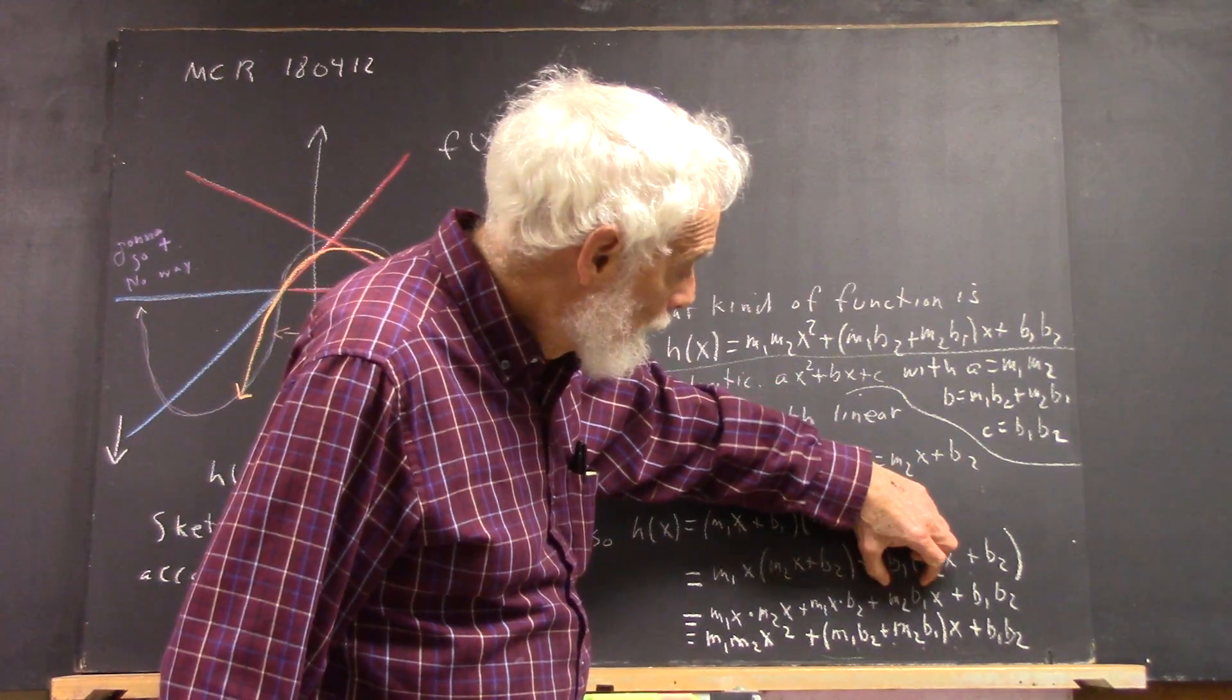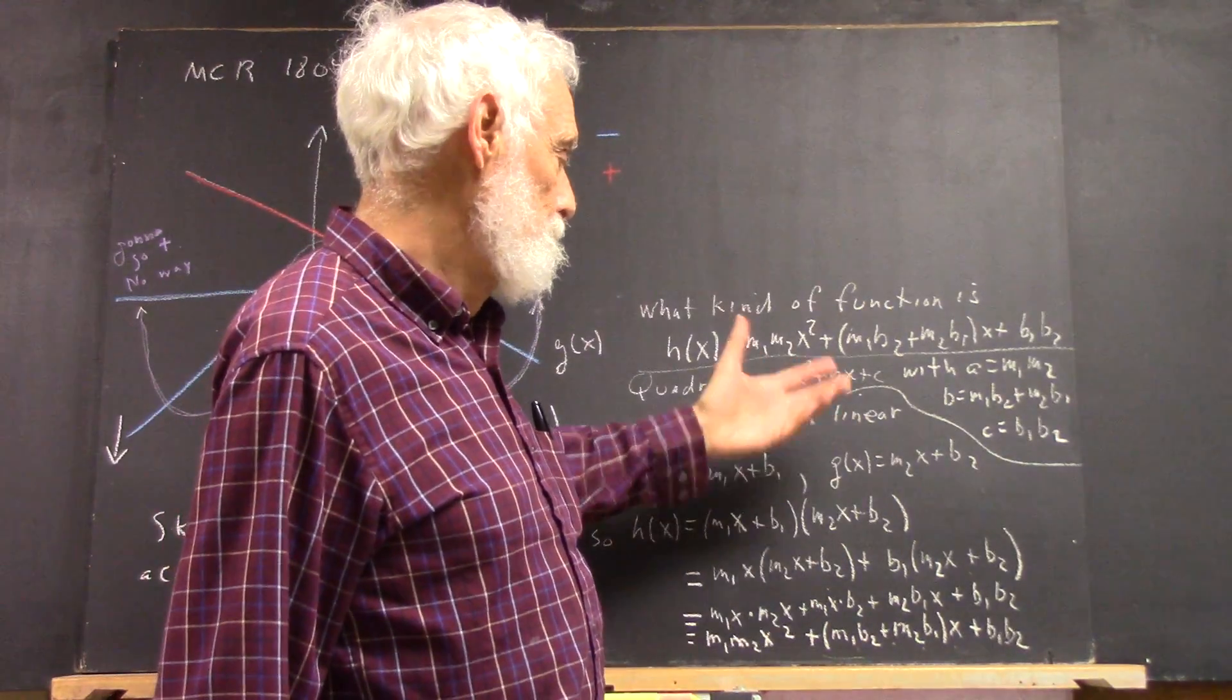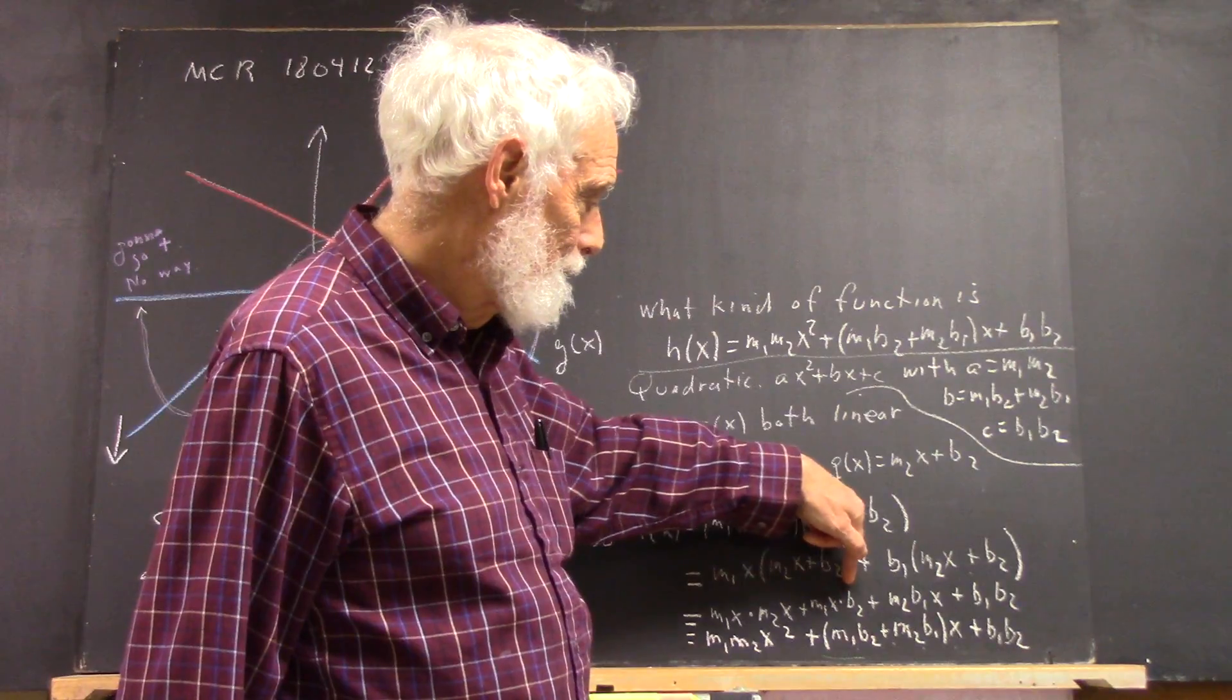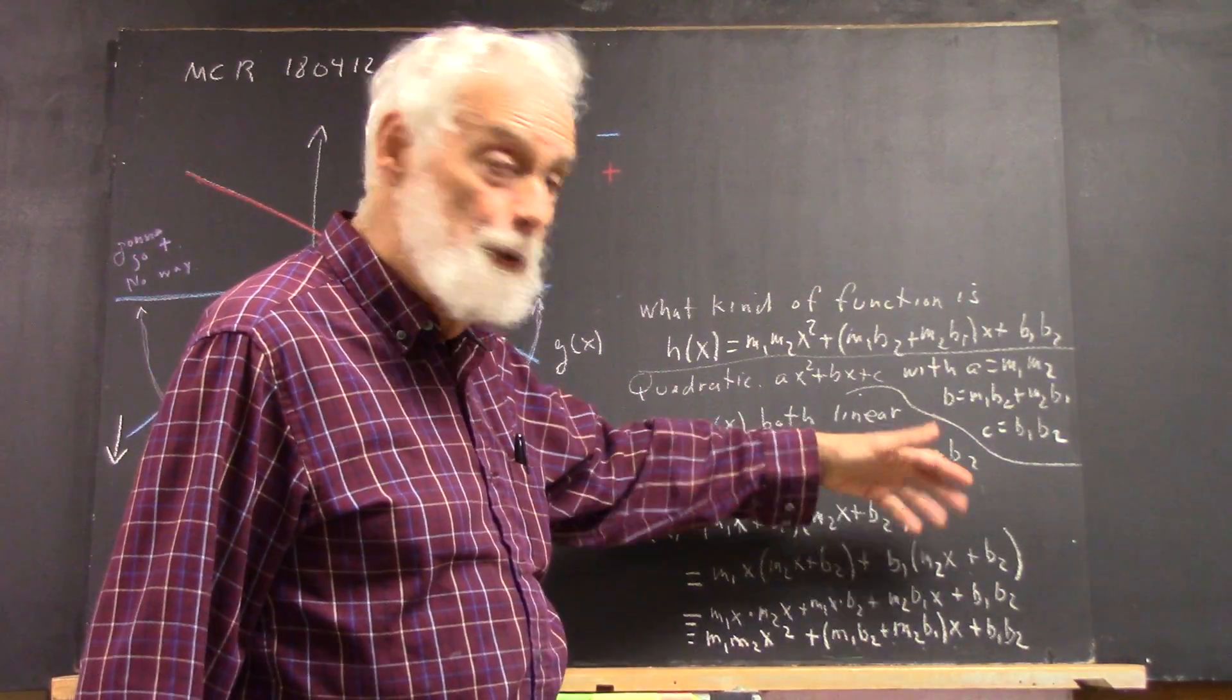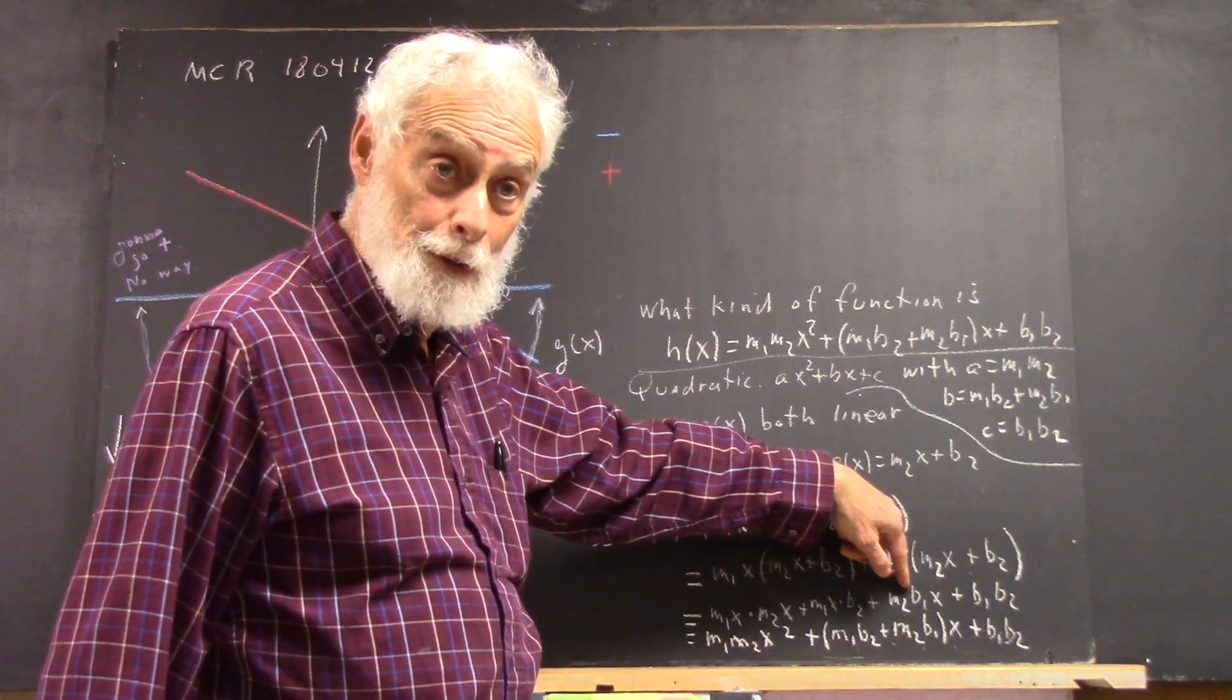And I wanted to write it kind of in the same order I did here, although really I didn't, with the m, the b, and the x here, but an m, an x, and a b here. But I was trying to keep the order of the m1s and b1s, the ms and the bs, the same for both of these. Okay? That's what I'm saying.